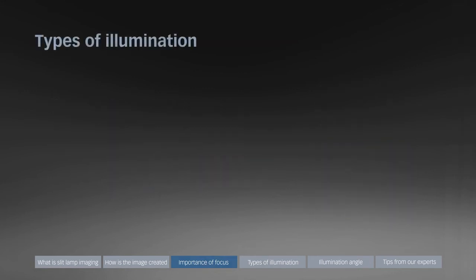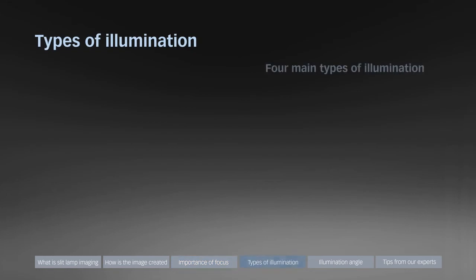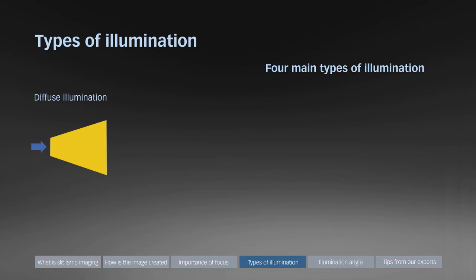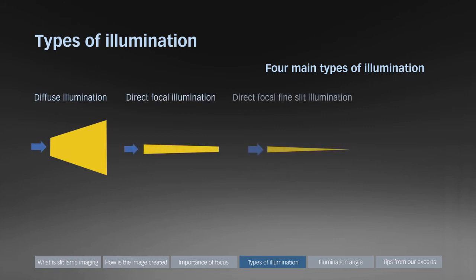This section gives an overview of four main types of illumination: diffuse illumination, direct focal illumination, direct focal fine slit illumination, and retro illumination.